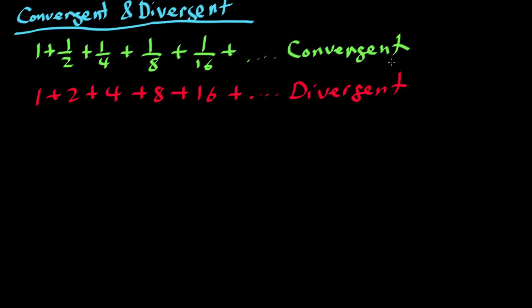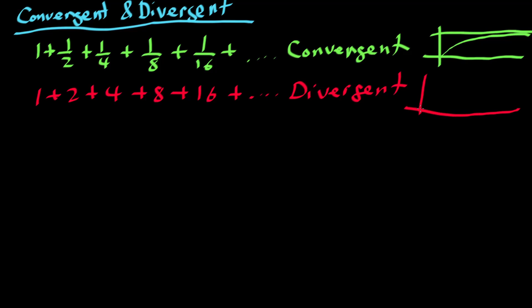The convergent series converges to some value — it grows more and more slowly and approaches a limit, similar to how a limit converges to a value. We don't know the arbitrary value yet, but we know it converges to some finite value. The divergent series, on the other hand, grows exponentially — one, two, four, six — and it diverges away from zero, going on and on, never settling at a value.